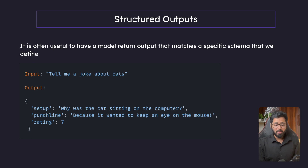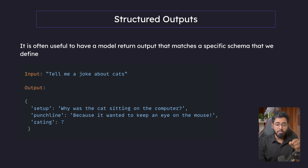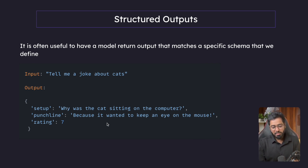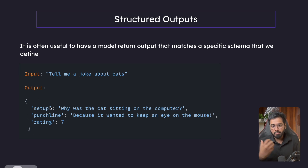Let me give you an example. Let's say I'm asking: tell me a joke about cats. Normally, without any structured outputs, the LLM is just going to give a string saying here's a joke. But what if I tell the LLM to give it to me in a particular output — a JSON with a setup, punchline, and rating. For example: setup is 'why was the cat sitting on the computer?', punchline is 'because it wanted to keep an eye on the mouse.' And I'm also telling it to give a rating and provide it in this exact format, so that I can take that object and put it in the database or show it to the user.